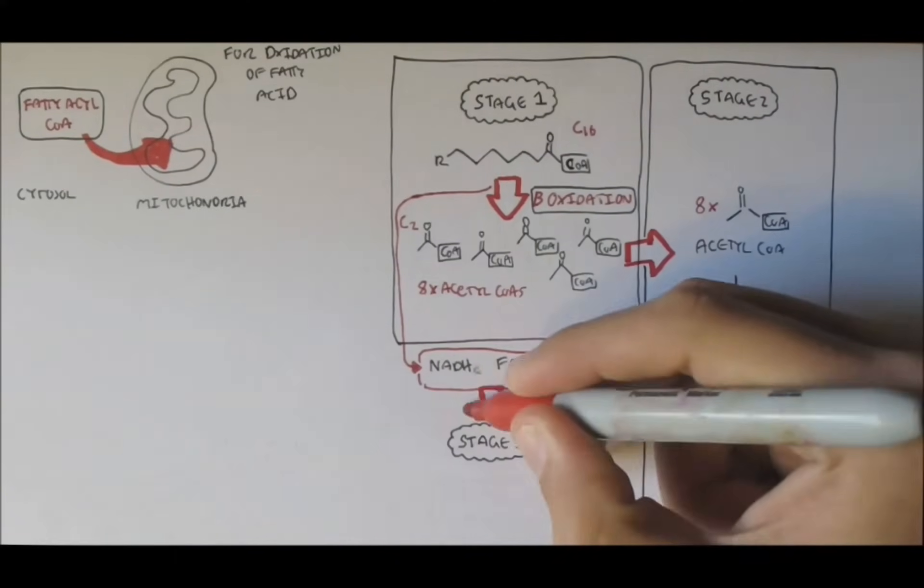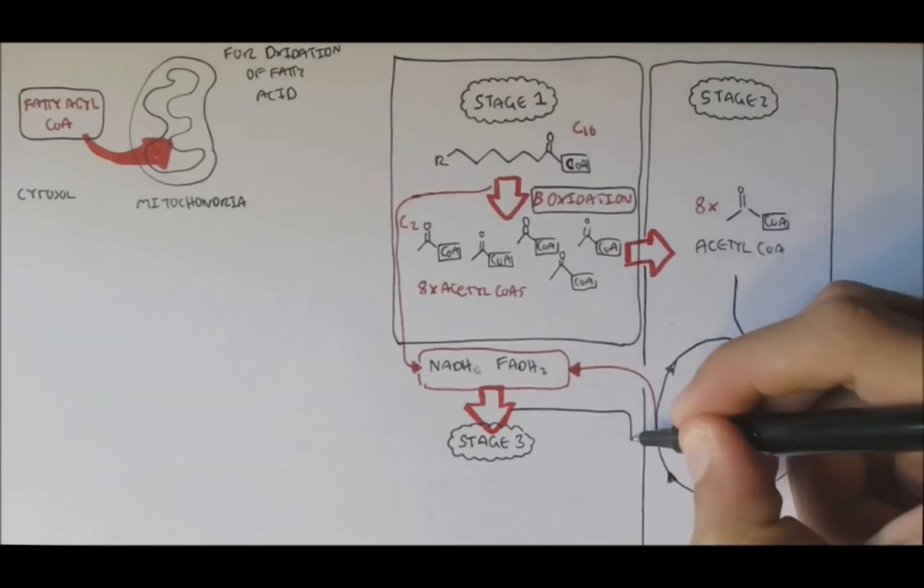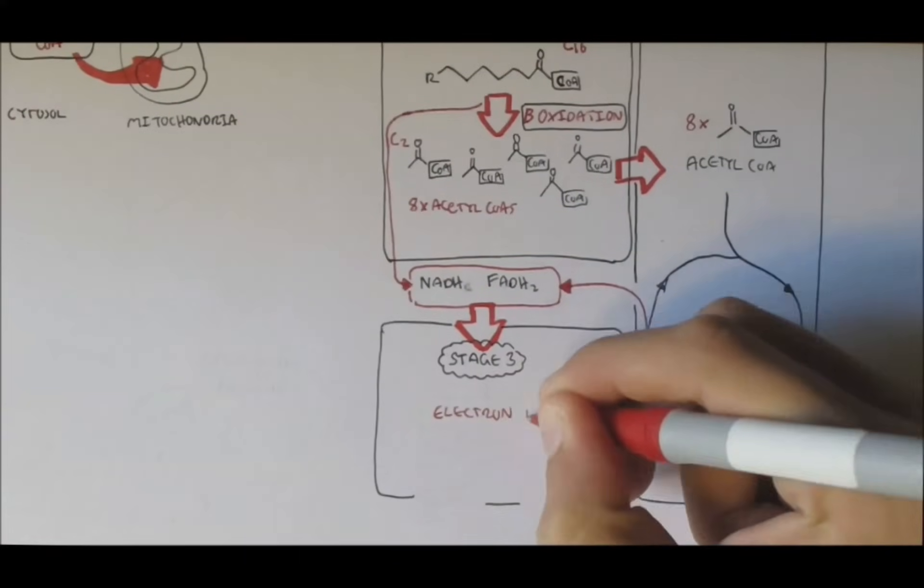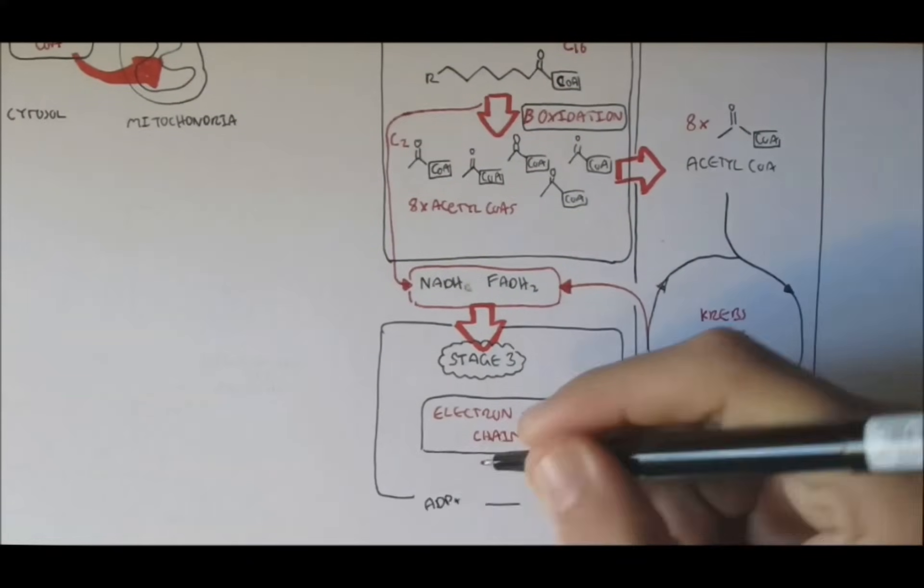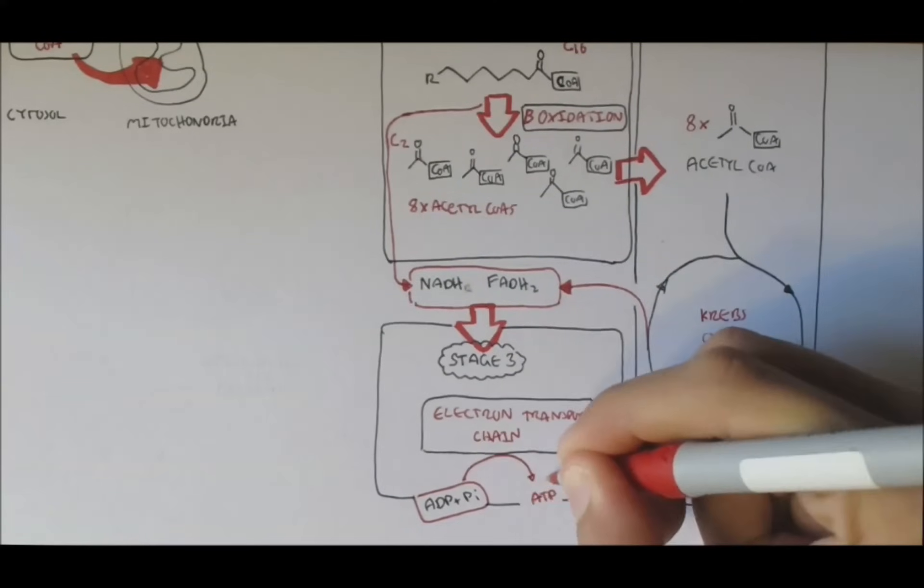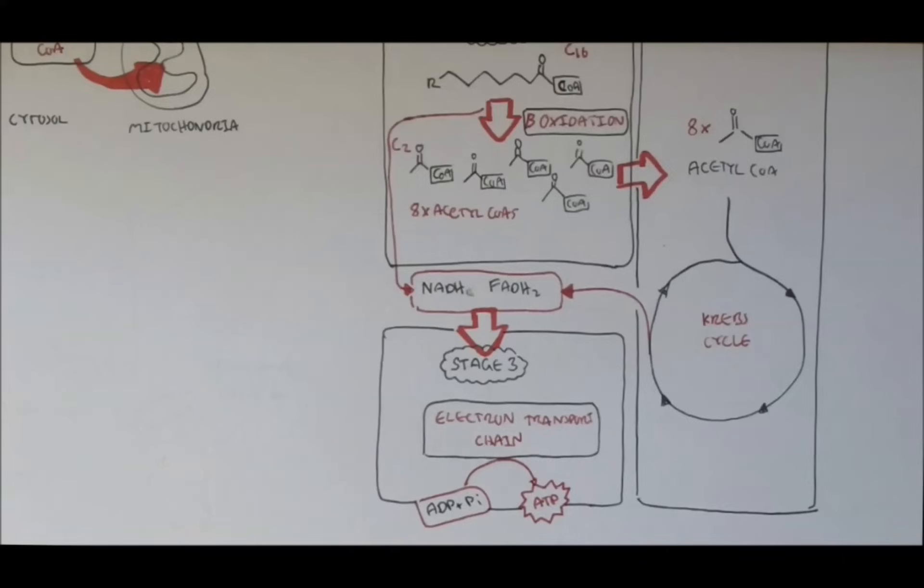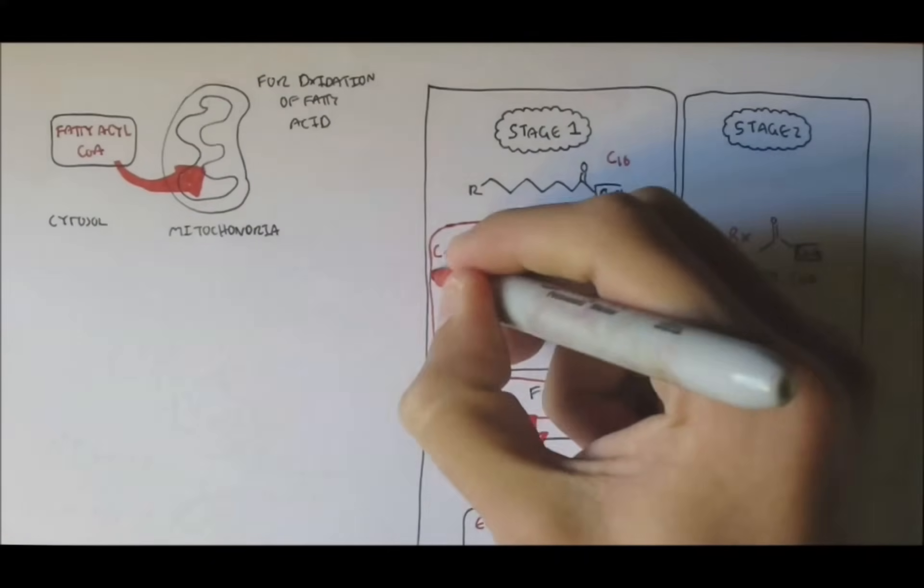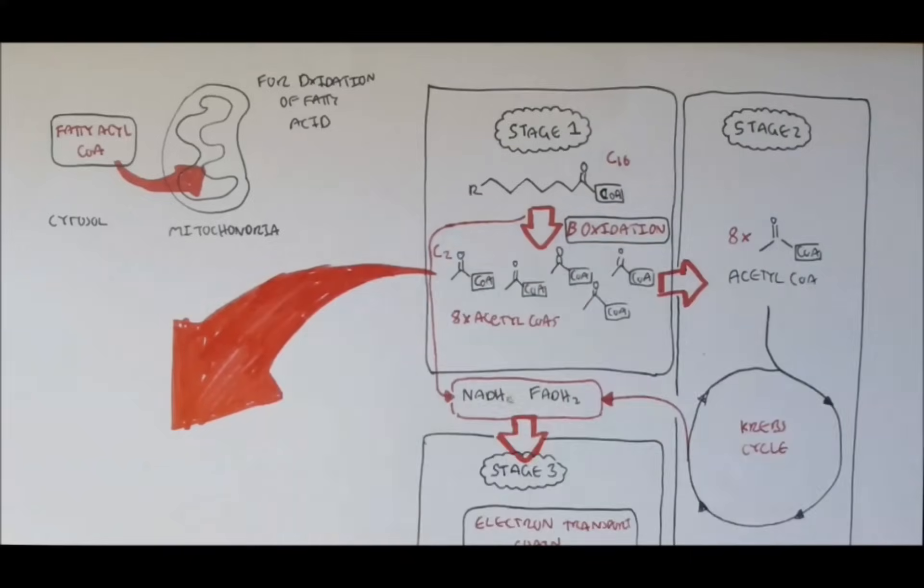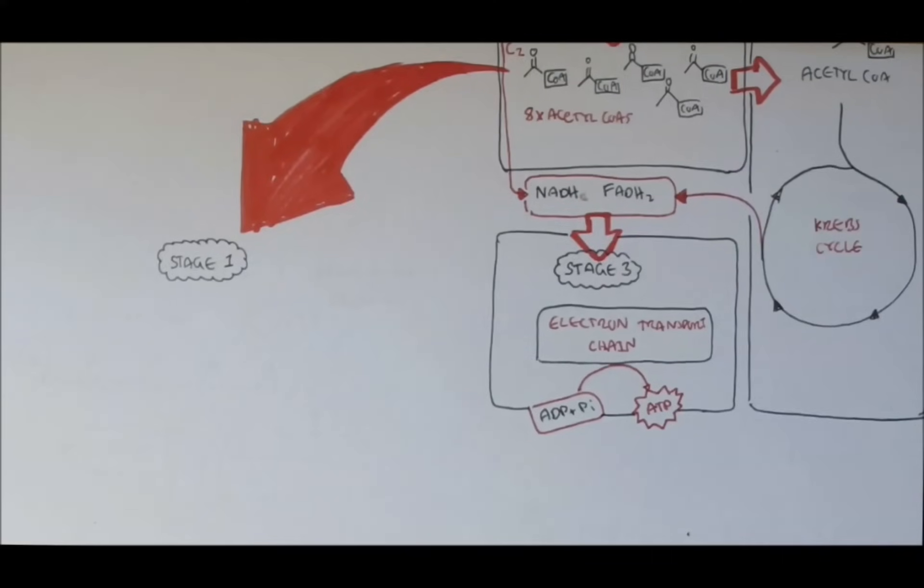So in stage 3, it's about the electron carriers. NADH and FADH2 gets fed into the electron transport chain to produce more ATP, from ADP and inorganic phosphate, just like cellular respiration. But what this video is actually more concentrating on is on stage 1, which is beta-oxidation. So let's have a closer look.